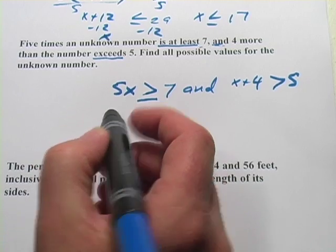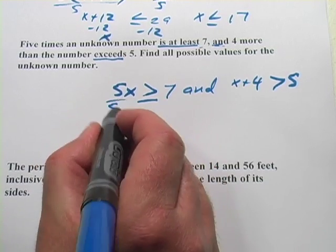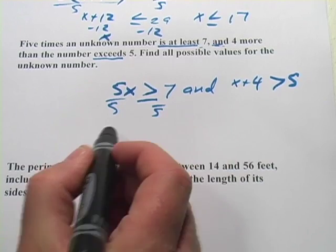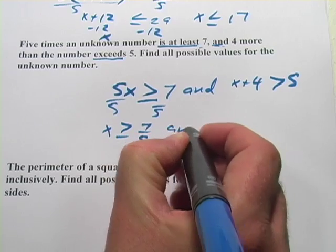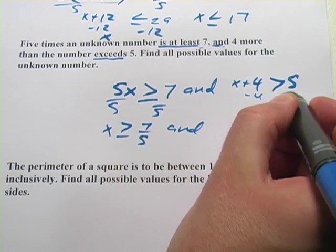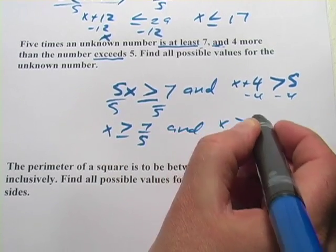We want to solve these. So we've got, well, we'll divide by five here. We've got x is greater than or equal to seven-fifths. And we'll subtract four here. We've got x is greater than one.